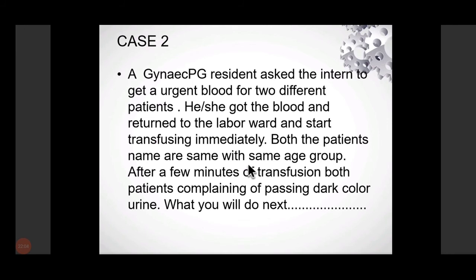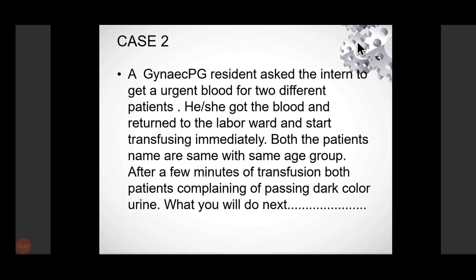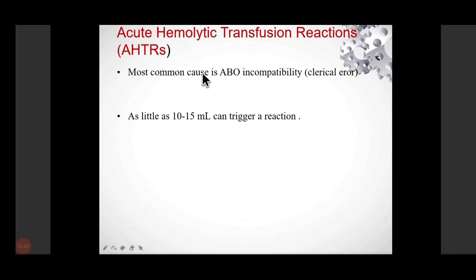Case 2: A resident asked an intern to draw blood urgently for two different patients. The intern got the blood and started transfusing immediately. Both patients had the same name and same age group. After a few minutes, both patients complained of cola-colored urine. This is acute hemolytic transfusion reaction. The most common cause is ABO incompatibility — it is a clerical error. Even 10 to 15 ml can trigger the reaction.